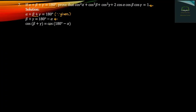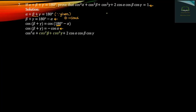For the solution, we use cos(180° minus α). Since γ = 180° minus (α + β), we substitute cos γ = cos(180° minus (α + β)) = minus cos(α + β). Using this substitution, cos²α plus cos²β plus cos²γ plus 2·cosα·cosβ·cosγ simplifies step by step to equal 1.